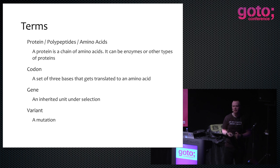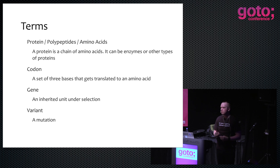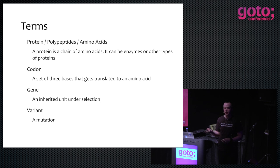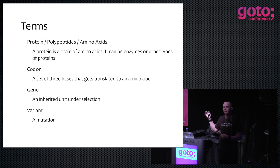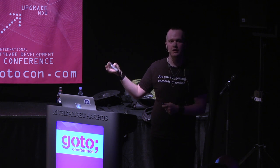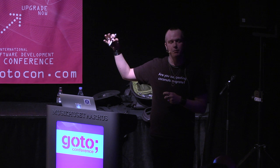If you hear me say variant, you can mentally substitute mutation. They are not actually the same, but for our purposes it doesn't really matter. In the literature, you won't find molecular biology papers that use the word mutation — instead it's called variants. There are two types of variants: germline variants and somatic variants. Germline variants are the ones you get from your parents — the mutations that make you different from each other. Somatic variants are the ones you have when you have a disease that causes genomic differences, such as in a tumor.